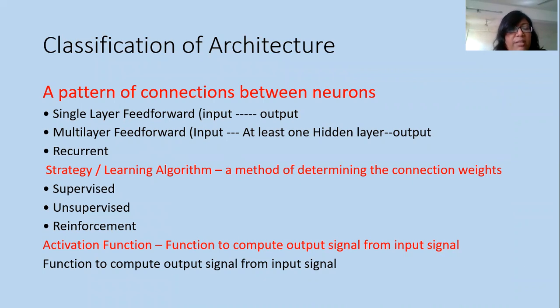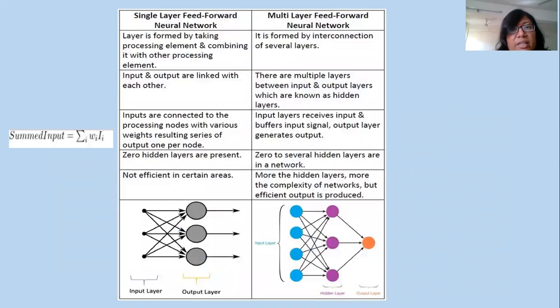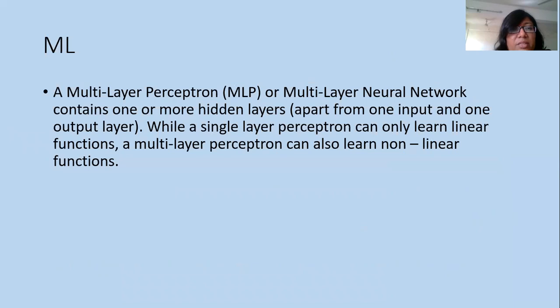If there is input and output with no hidden layer between them, this type of network is called a single-layer feed-forward network. If there is one or more hidden layers between input and output, we call it a multi-layer feed-forward network. In the single-layer there are zero hidden layers, but in the multi-layer there is at least one hidden layer, or it can be more than one.